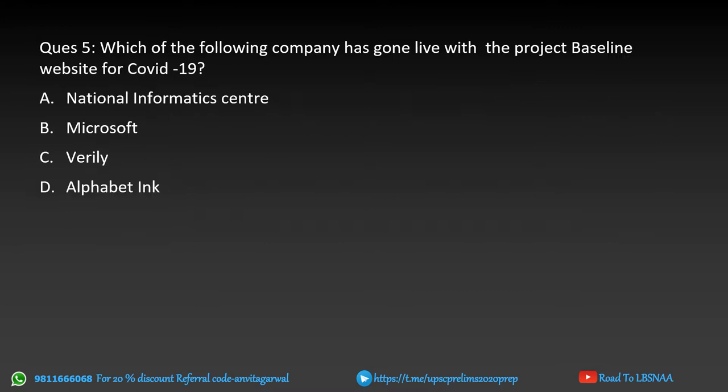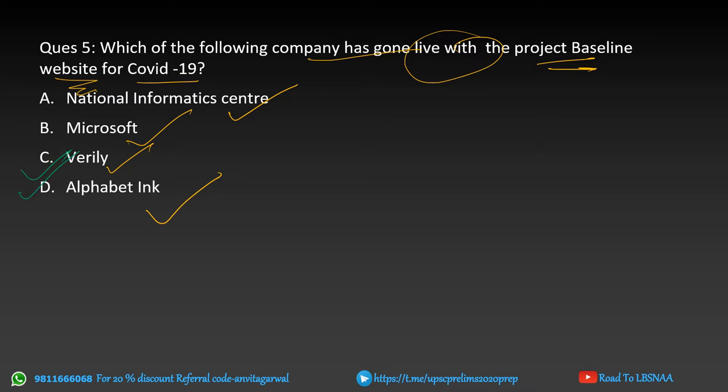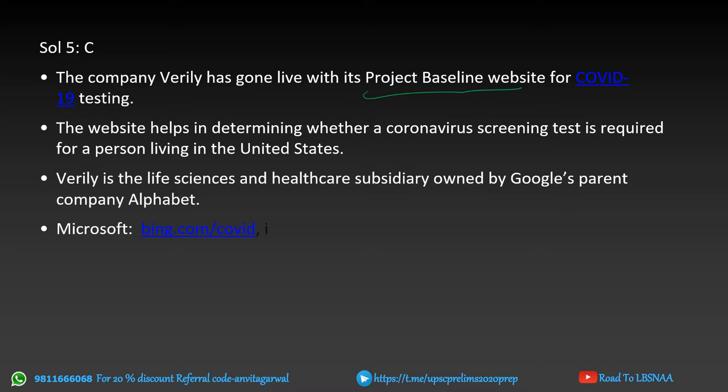Next question: which company has gone live with the Project Baseline website for COVID? Options are National Informatics Centre (NIC), Microsoft, Verily, or Alphabet. The correct choice is Verily. Verily is a subsidiary of Alphabet, which is Google's parent company. Verily launched the Project Baseline website for COVID-19 testing. Verily is a life sciences and healthcare subsidiary owned by Alphabet.